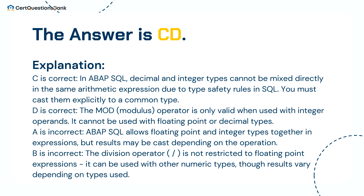The answer is C and D. C is correct: in ABAP SQL, decimal and integer types cannot be mixed directly in the same arithmetic expression due to type safety rules — you must cast them explicitly to a common type. D is correct: the mod (modulus) operator is only valid when used with integer operands; it cannot be used with floating point or decimal types.